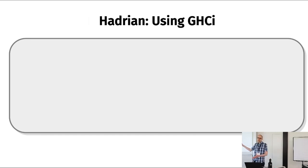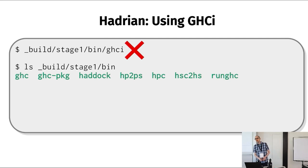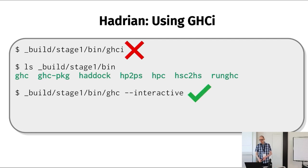One possible gotcha: don't try to run ghci directly from a Hadrian build. A typical Hadrian build is more minimal than a typical GHC distribution. If you want to run GHCi, you should run GHC with the --interactive flag. GHCi itself is an alias for this, so this is the correct way to run GHCi.